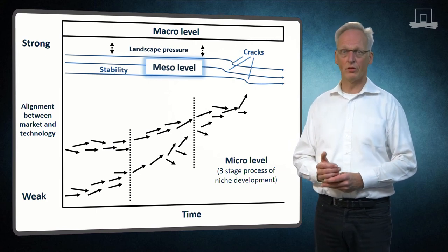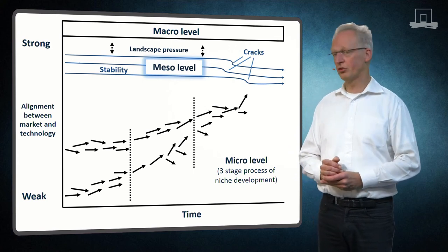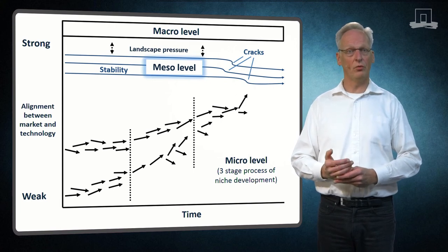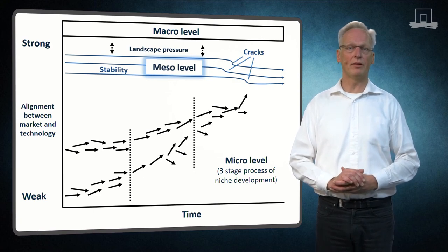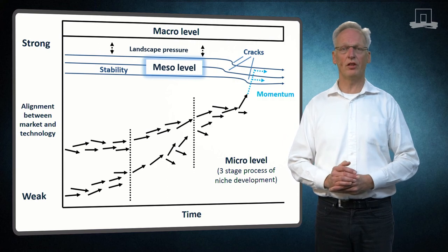In contrast, when landscape forces activate actors, cracks in the regime may lower regime stability at the meso level, creating windows of opportunities for niches to come up. Niches may then develop and gain momentum, become better aligned between market and technology.